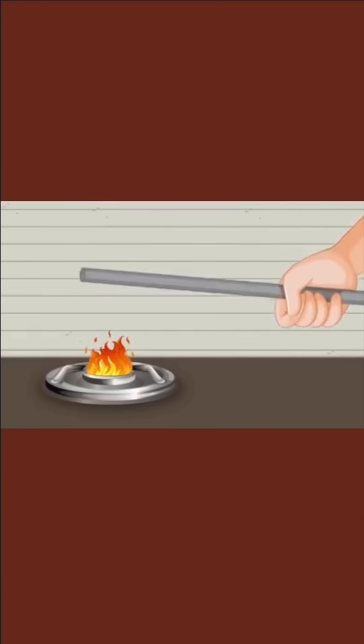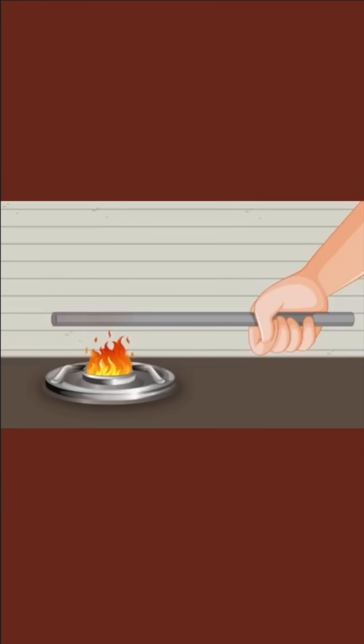Now, what is heat? Heat is the energy that flows from something hotter to something cooler. For example, when you hold a hot cup, heat moves from the tea to your hand — this is called conduction. So temperature shows how hot something is, while heat shows how much energy is moving.